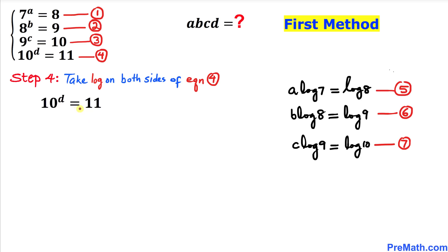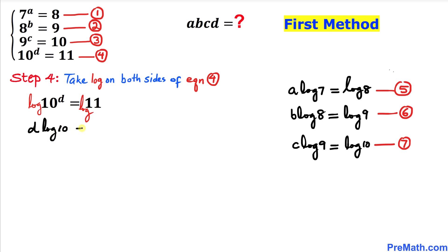Now let's focus on equation four. I've copied it down. Let's take a log on both sides. We can see exponent d — we can bring it all the way to the front. So this equation can be written as: d times log of ten equals to log of eleven. Let me call this equation number eight.